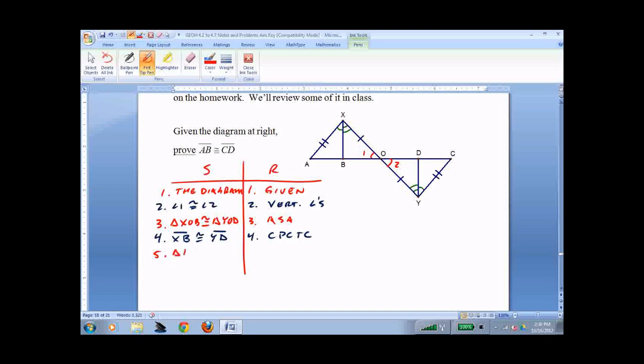Triangle AXB is congruent to triangle CYD, and that's by side angle side because we know that these were pulled off by CPCTC. And last but not least, AB is congruent to CD, CPCTC.